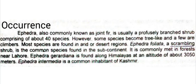About 40 species are found in the Ephedra genus. Some species become tree-like and a few are climbers. Most species are found in arid or desert regions in which low rainfall occurs.